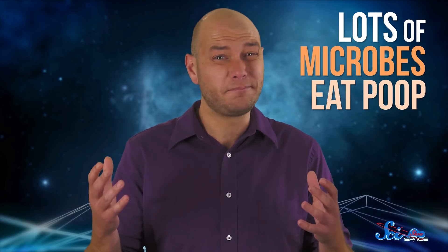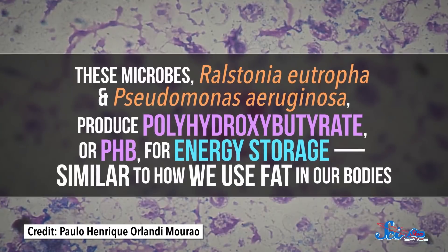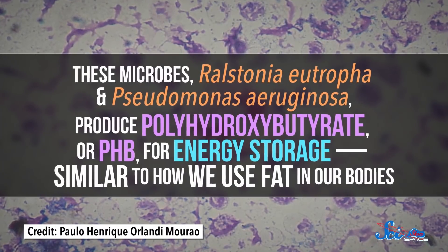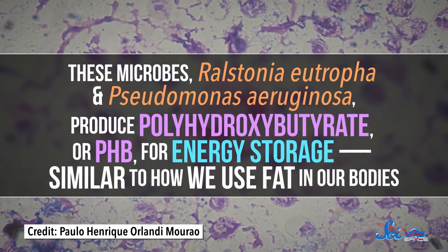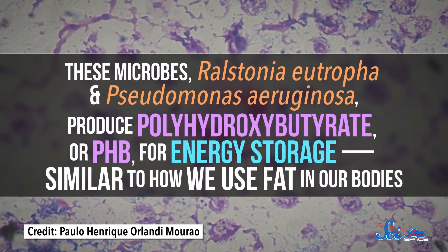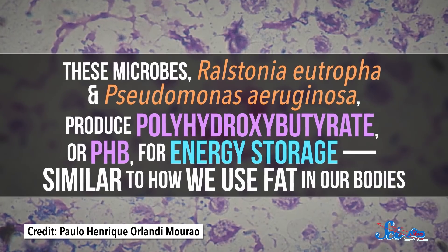They're kind of responsible for poop's whole deal. But a couple of special species of microbes eat poop and produce plastic. These microbes, Ralstonia eutropha and Pseudomonas aerogenosa, produce polyhydroxybutyrate, or PHB, for energy storage, similar to how we use fat in our bodies.